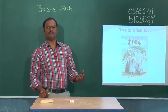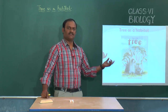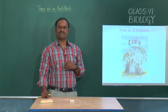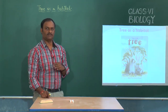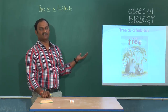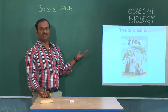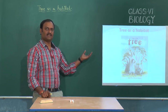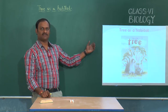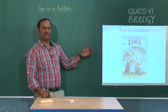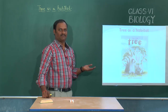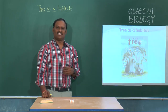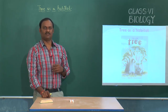Till now, we have discussed different types of habitats. In those, we have seen about pond habitat which comes under aquatic habitats. Now, let us discuss about different types of habitats which come on land. We call those habitats as terrestrial habitats.